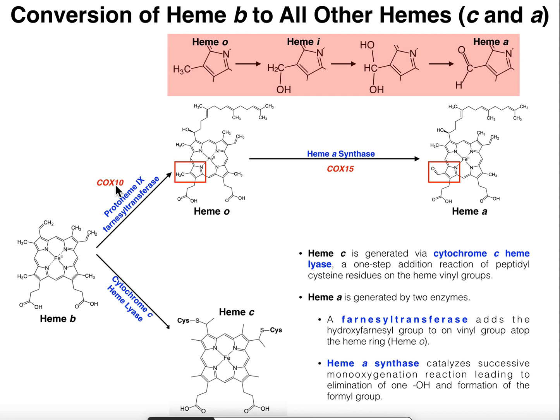Heme A is going to be found mainly in cytochrome oxidase, which is complex four of the mitochondria. That's the major place we're going to be finding heme A, and we'll talk about how it gets added into that enzyme complex. Now let's talk about the synthesis of heme C.